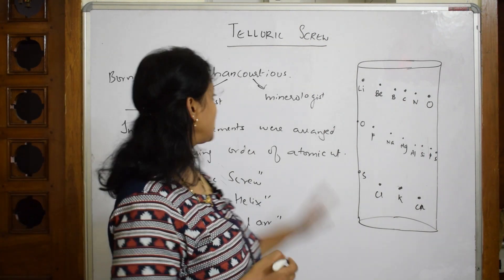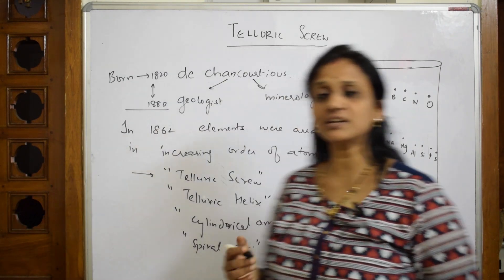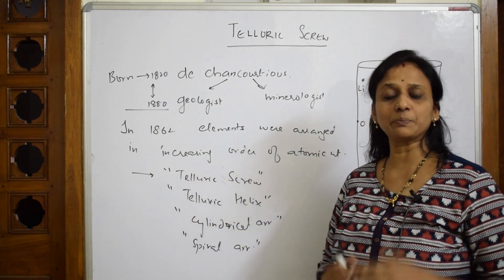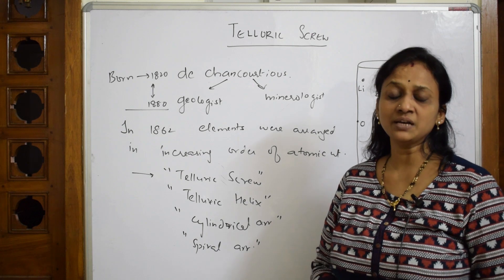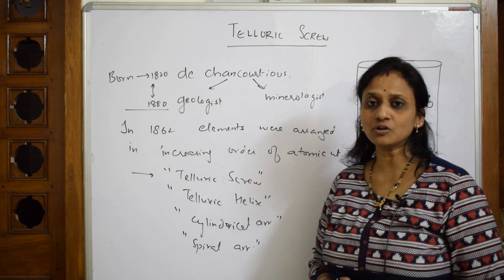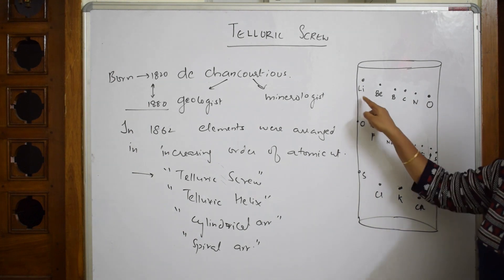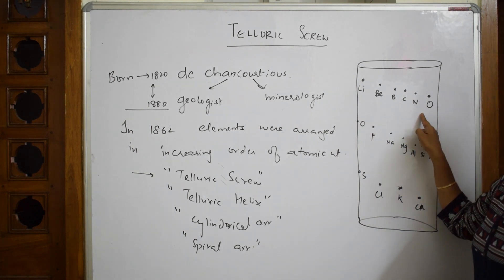Basically all this, whatever telluric helix or spiral arrangement was given, it was not published till Mendeleev has come and given his assumptions. This was not an accepted law. But whatever elements is found, he has arranged according to the increasing atomic weights.